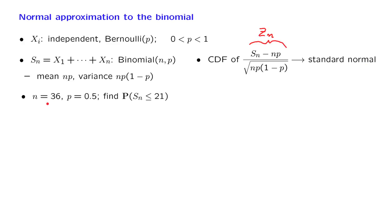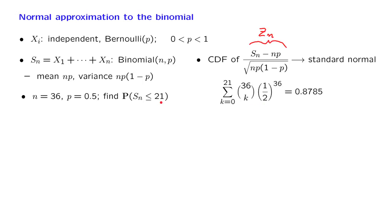Let us fix some parameters: n is 36, p is 0.5, and we wish to calculate the probability that Sn is less than or equal to 21. In this case, we can calculate it exactly using the binomial formula. The probability of being less than or equal to 21 is the sum of the probabilities of all numbers from 0 to 21, and by calculating this expression we obtain the exact answer.